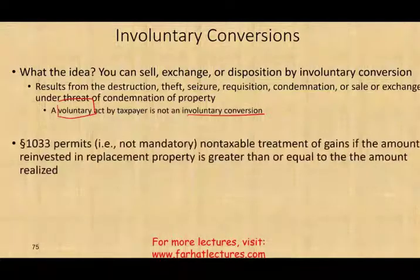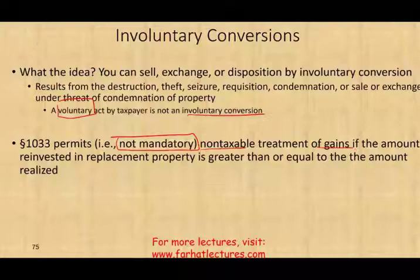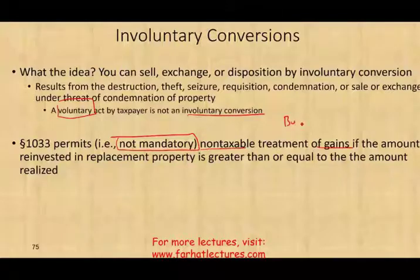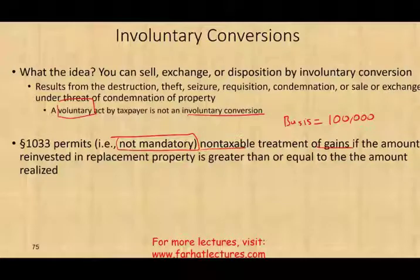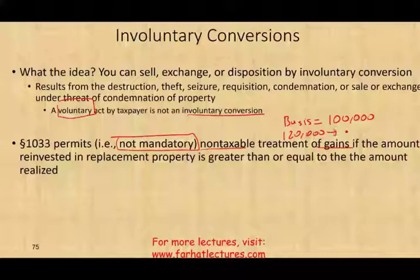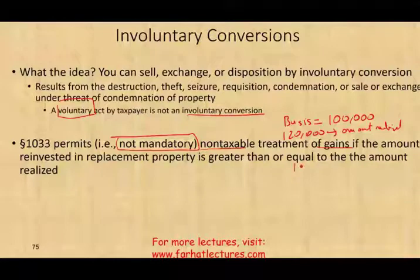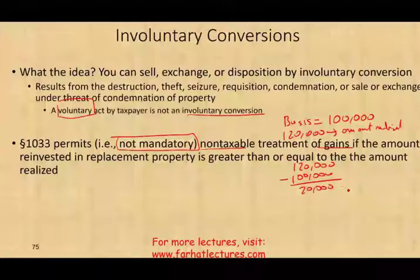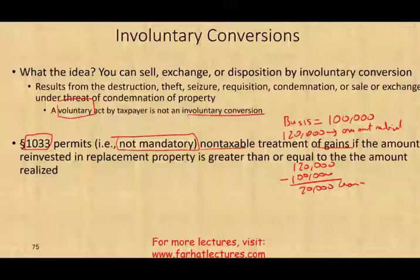Section 1033 permits — and it's elective, not mandatory — non-taxable treatment of gain if the amount reinvested in the replacement property is greater than or equal to the amount realized. For example, if your asset has a basis of $100,000 and you receive $120,000 from an insurance company, the amount realized is $120,000, giving you a gain of $20,000. If you reinvest that amount in a replacement property, the gain will be deferred, not eliminated.